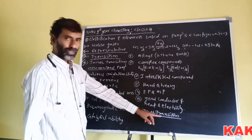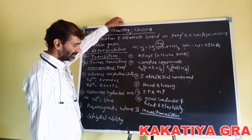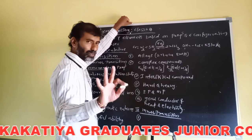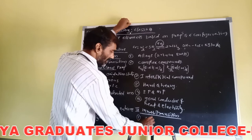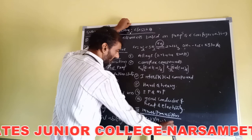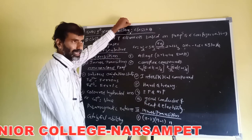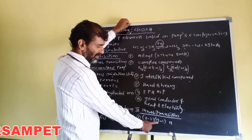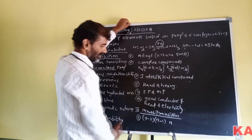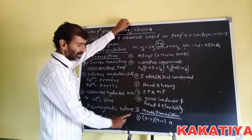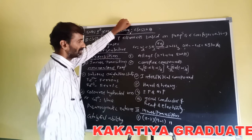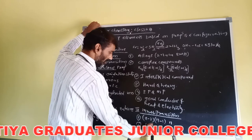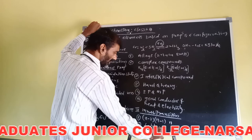Inner transition elements have incompletely filled three outer orbitals: n minus 2, n minus 1, and n. These inner transition elements are called f-block elements.